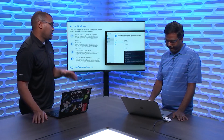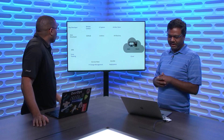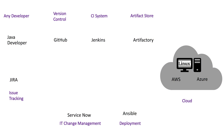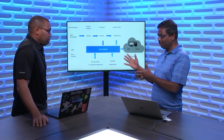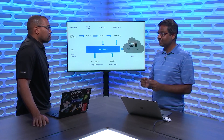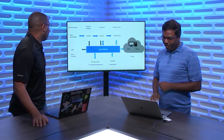In today's demo, we're taking a typical Java developer who has GitHub as their version control, Jenkins as their CI system, and Artifactory as their artifact store — Jenkins builds and pushes into Artifactory. Azure Pipelines comes into the picture, takes all the artifacts from Jenkins and Artifactory, uses ServiceNow as a change management system, Ansible for deployment, and shows a multi-cloud scenario deploying the same application to both AWS and Azure.